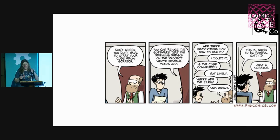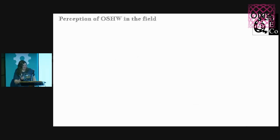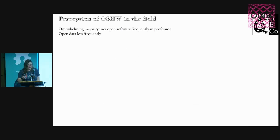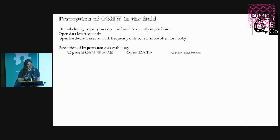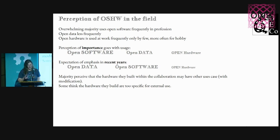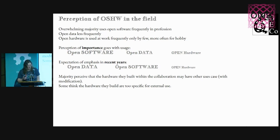I don't think we are in the same place with hardware as we are with software — we know what we're doing with open software and rely on it heavily. With hardware, at least in LIGO, we make it open but not in a way that's easily usable. What's the perception? Everybody uses software. Data is used less frequently. Open hardware is used more often for hobby than anything else. The emphasis in recent years has been more on open data, partially because of NSF mandates. Open hardware gets some measurable response, but not much — it's not really an emphasis in our community, though it is growing.